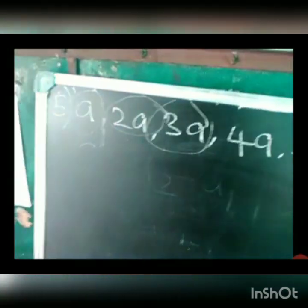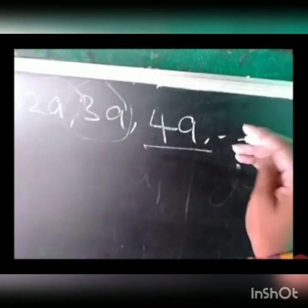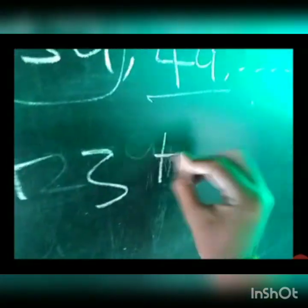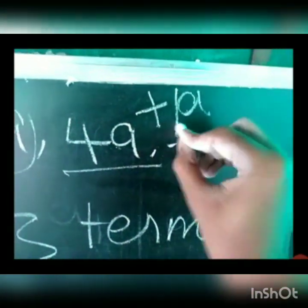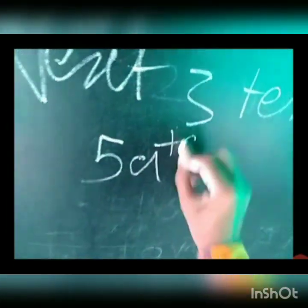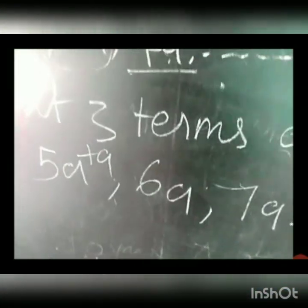To find the next three terms, identify the last term given, which is 4a. Add the common difference a to get the next term: 4a plus a equals 5a. Then adding a again gives 6a, and once more gives 7a. So the next three terms are 5a, 6a, and 7a.